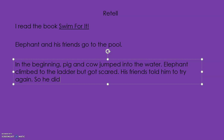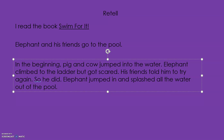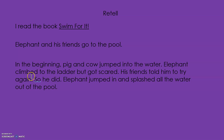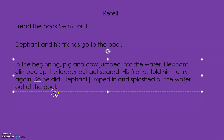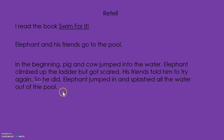So he did. Then what happened in the end? Do you remember? He jumped in and all the water came out. Elephant jumped in and splashed all the water out of the pool. Okay, let's reread this. I read the book, 'Swim for It.' Elephant and his friends go to the pool. In the beginning, pig and cow jumped into the water. Elephant climbed up the ladder, but got scared. His friends told him to try again, so he did. Elephant jumped in and splashed all the water out of the pool.